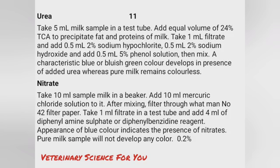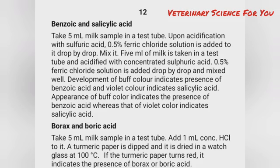Detection of benzoic and salicylic acid — take 5 ml milk sample in a test tube, acidify with sulfuric acid, and add 0.5% ferric chloride solution drop by drop. Development of buff color indicates the presence of benzoic acid, while appearance of violet color indicates salicylic acid.